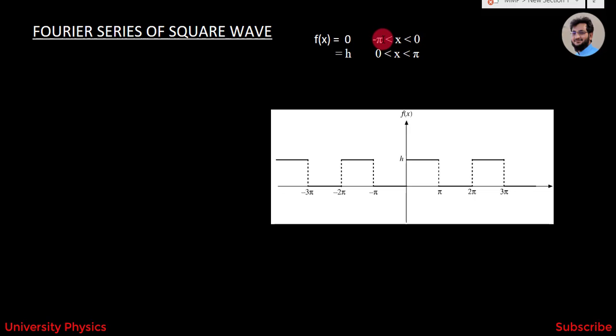Therefore, we will have to find all the Fourier coefficients — that means we have to find a0, aN, and bN.